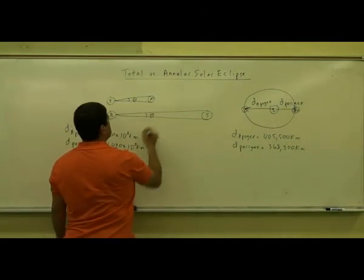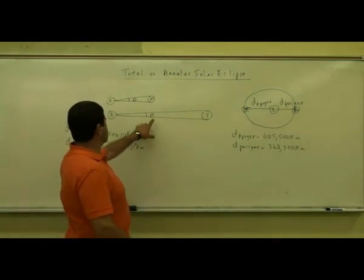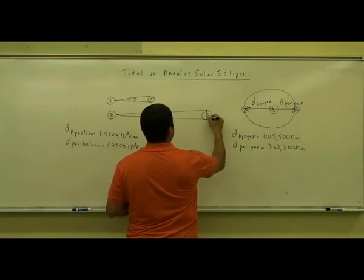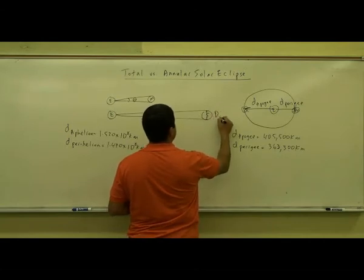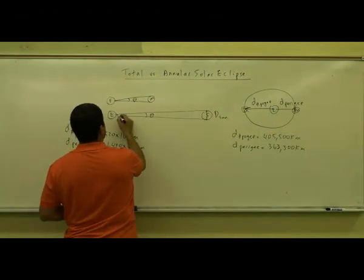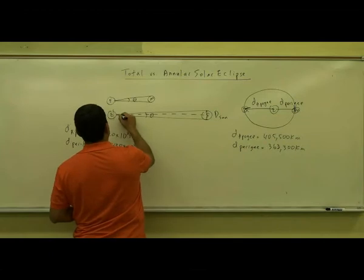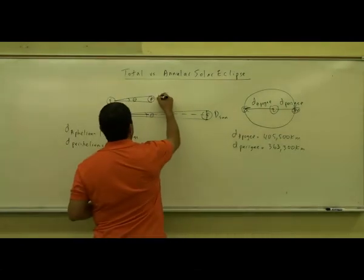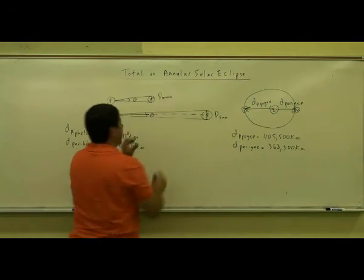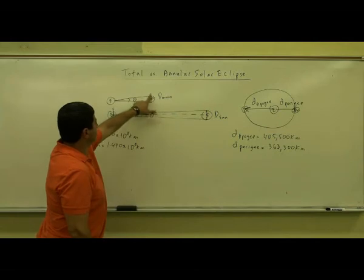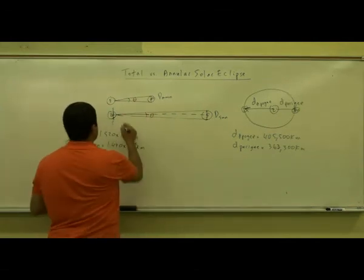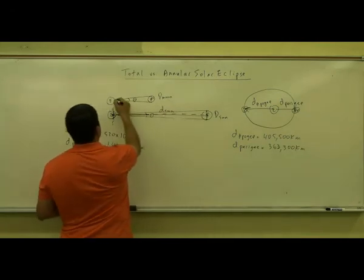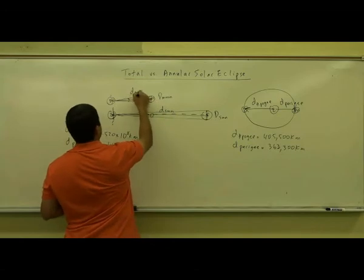Since the angular diameter is going to be pretty small, we can use the small angle approximation: theta equals the diameter of the object divided by the distance to the object. So we use the diameter of the Sun divided by the distance from the Earth to the Sun, and the diameter of the Moon divided by the distance from the Earth to the Moon.